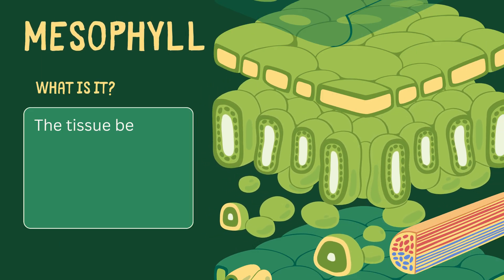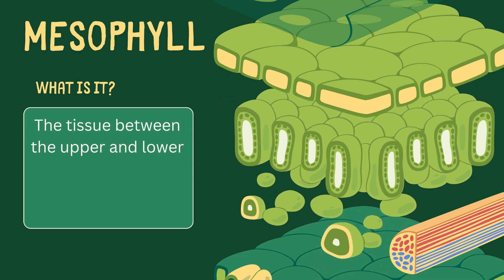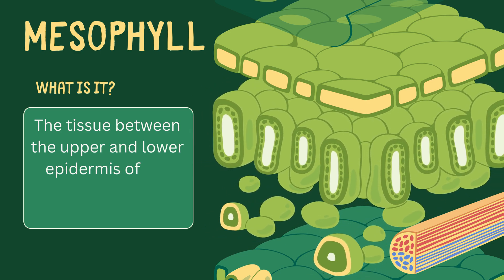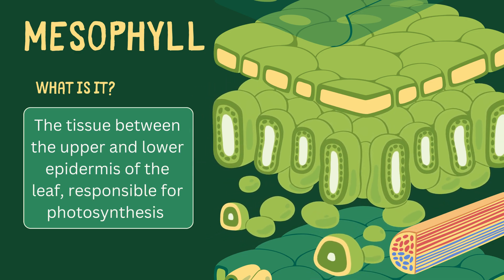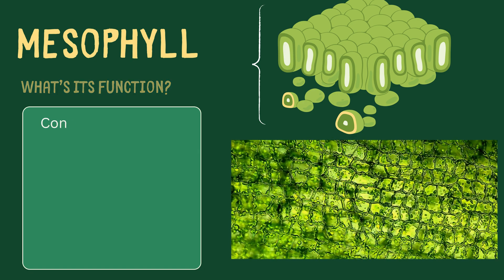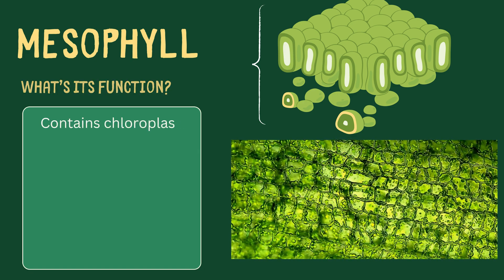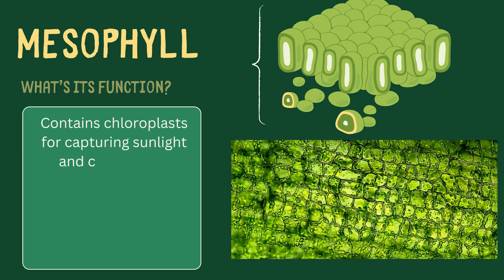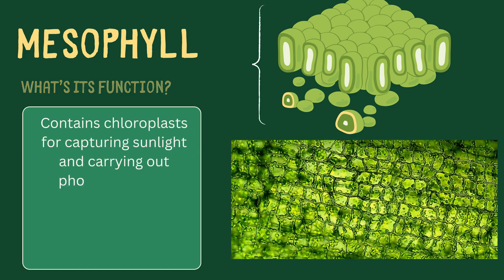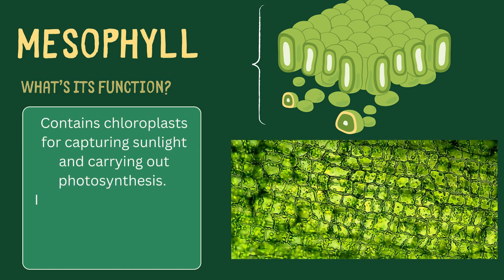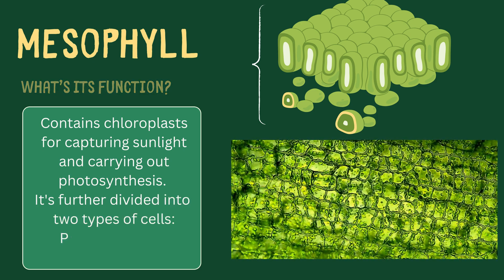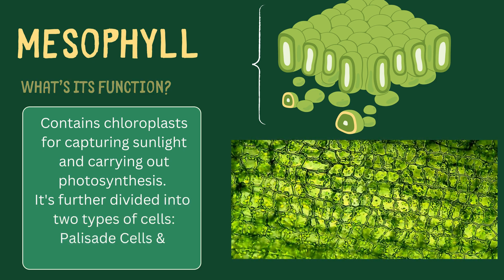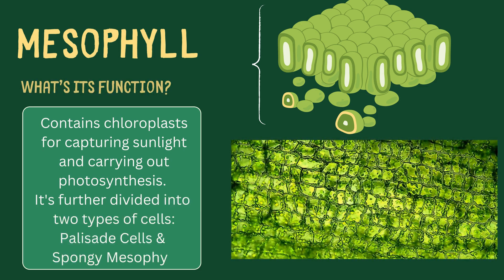Mesophyll. It is the tissue between the upper and lower epidermis of the leaf, responsible for photosynthesis. It contains chloroplasts for capturing sunlight and carrying out photosynthesis. It's further divided into two types of cells: palisade cells and spongy mesophyll.